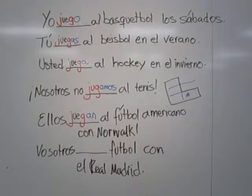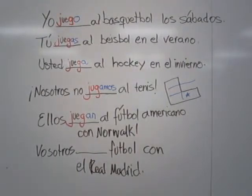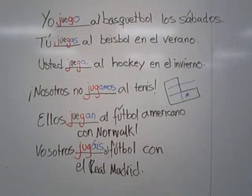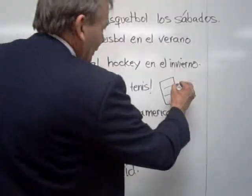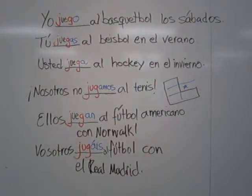Ellos juegan al fútbol americano con Norwalk — they play American football with Norwalk. Ellos is on the lower right, so it is within the boot, and the stem does change. Vosotros jugáis al fútbol con el Real Madrid. Real Madrid and vosotros are only used in Spain, and therefore it comes from outside the boot, so the stem does not change in that one.